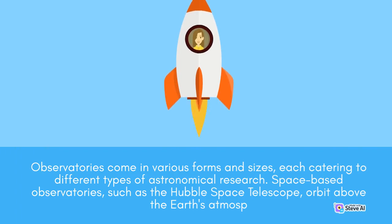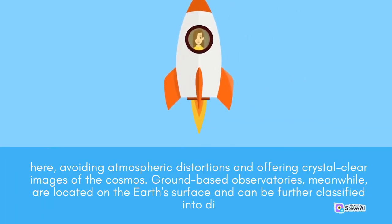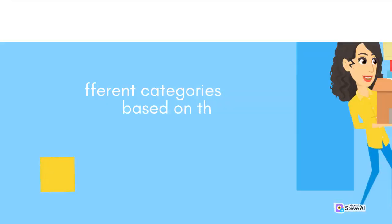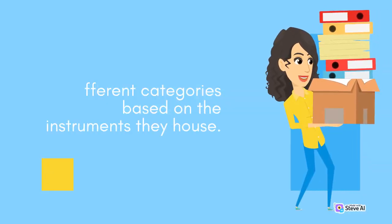Observatories come in various forms and sizes, each catering to different types of astronomical research. Space-based observatories, such as the Hubble Space Telescope, orbit above the Earth's atmosphere, avoiding atmospheric distortions and offering crystal-clear images of the cosmos. Ground-based observatories, meanwhile, are located on the Earth's surface and can be further classified into different categories based on the instruments they house.